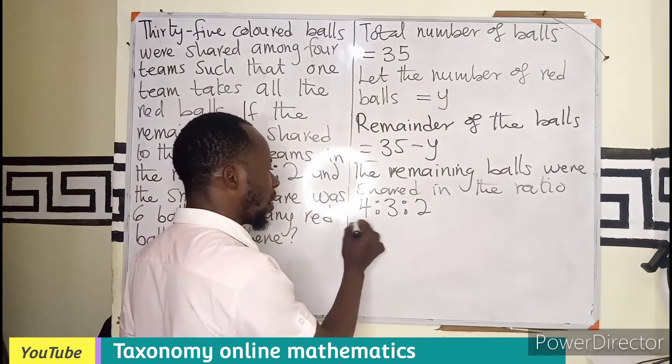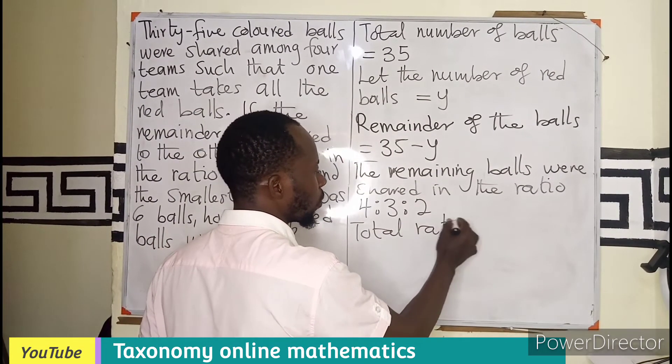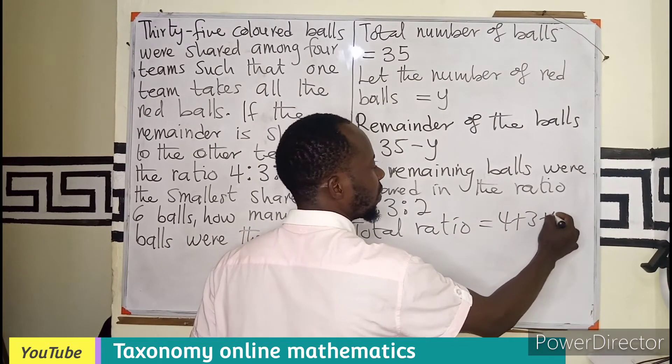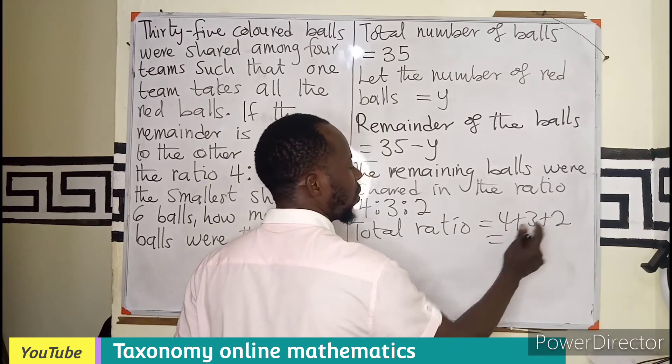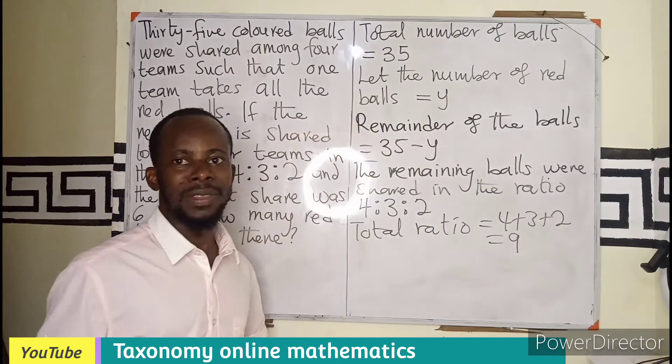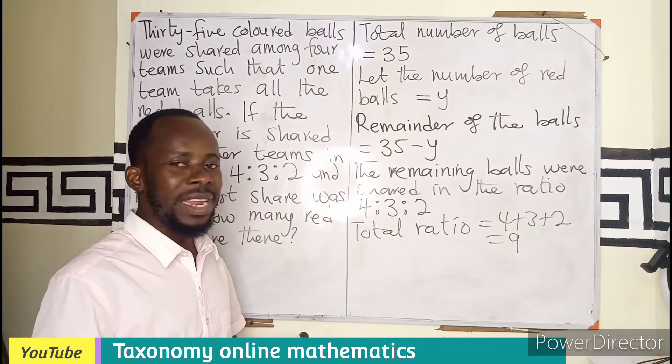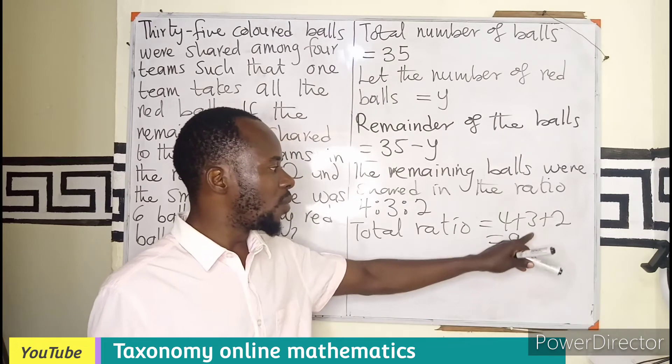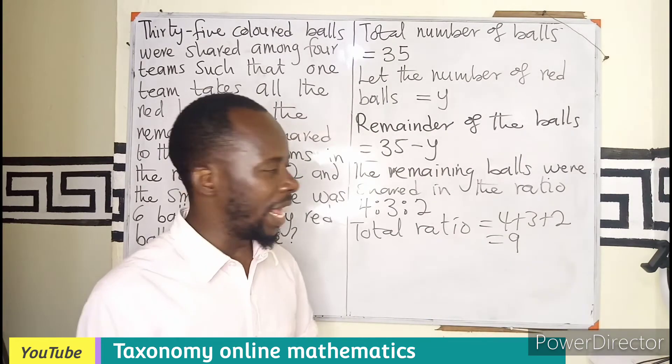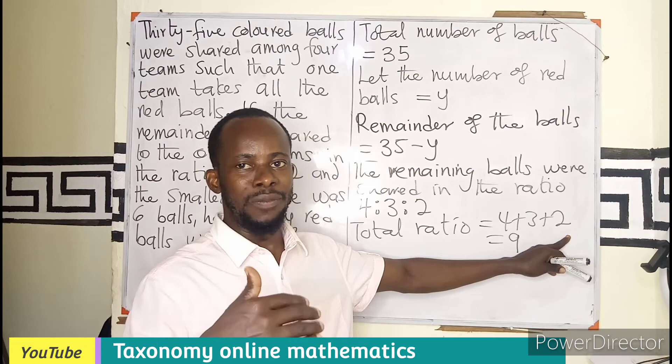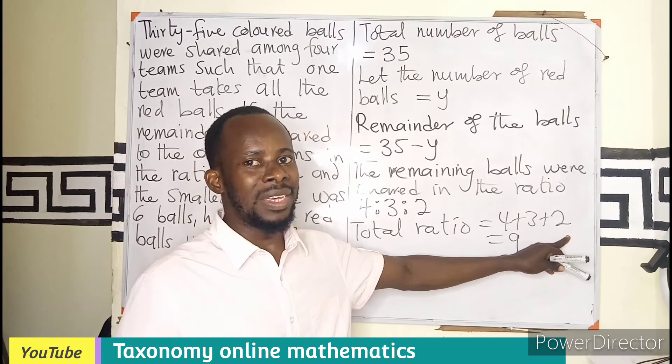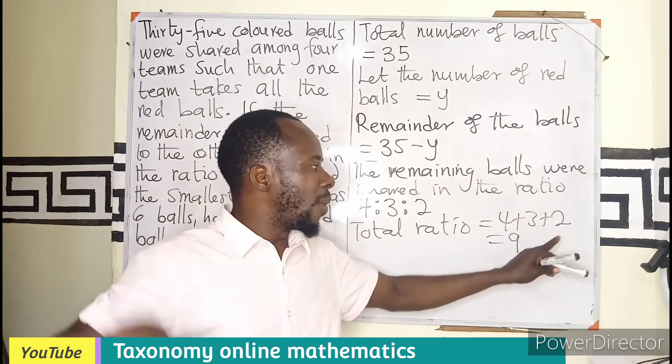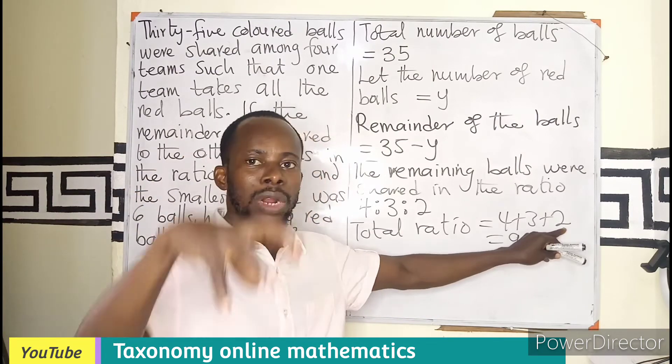So we need to find total ratio which is going to be 4 plus 3 plus 2 gives us 9. So it means that we are going to divide the remaining ball into 9 parts. The first team will take 4 parts, the second team will take 3 parts, and the next team will take 2 parts. You can agree that the person taking the 2 groups takes the smallest number of balls.